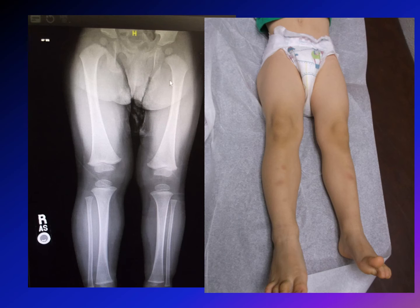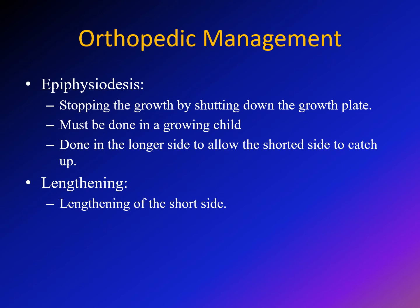With examination of the child, you can decide if this is an isolated case or secondary to other causes like Beckwith-Wiedemann syndrome. After discussing general surveillance and tumor screening, from the orthopedic point of view the management is one of two options: either epiphysiodesis or lengthening.